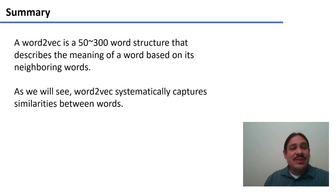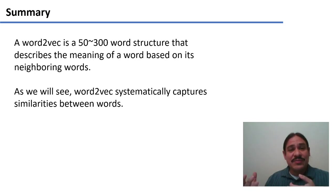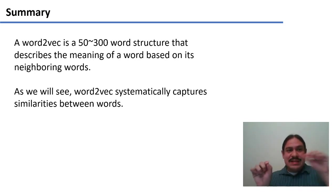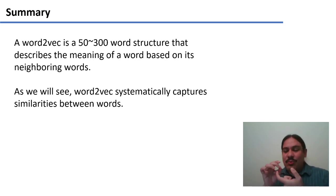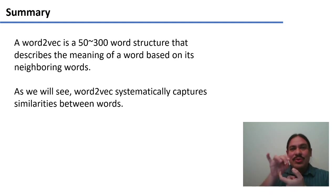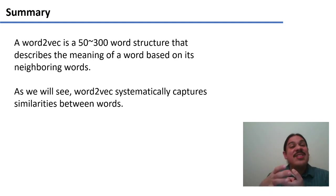In summary, a word2vec has 50, 200, or 300 features, and it describes the meaning of a word based on its neighboring words. As we'll see in the next video, this has very interesting properties — the weights for words like ong choy, spinach, and kale are very similar, so we can capture a lot of meaning and analogies between words using word2vec.